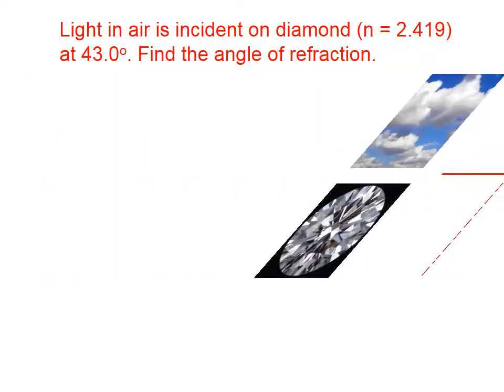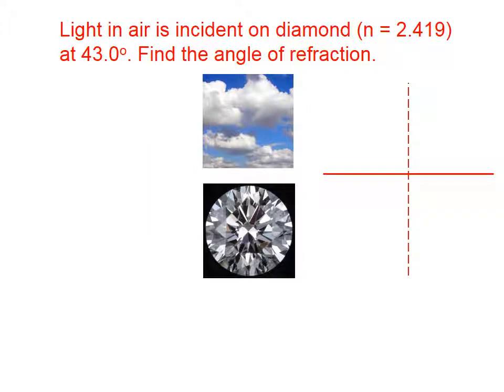Let's try an example. Light in air is incident on diamond at 43 degrees. Find the angle of refraction. What I've drawn here is a boundary indicated by the solid line and a normal indicated by the dashed line.